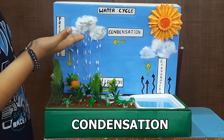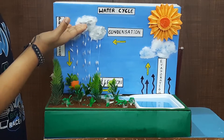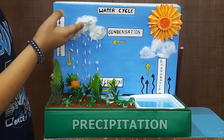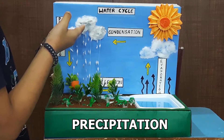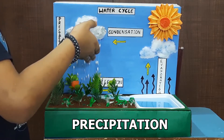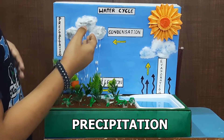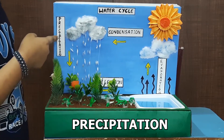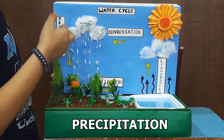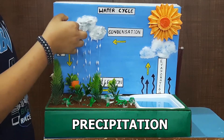These water droplets join together to form clouds. When enough water gathers in the clouds, they release water back to the earth's surface as rain or snow. This process is called precipitation. Precipitation has a cooling effect on the weather of a place.